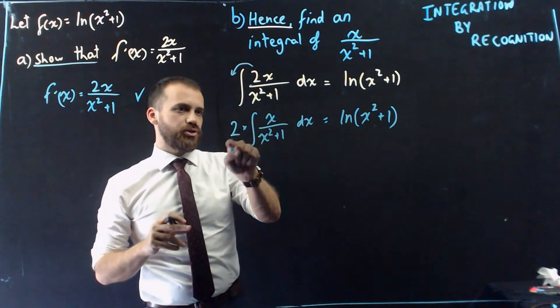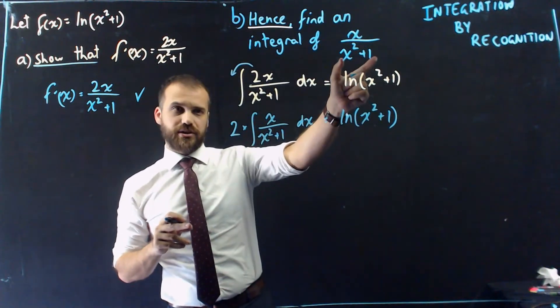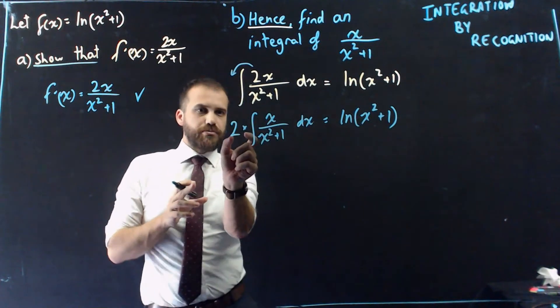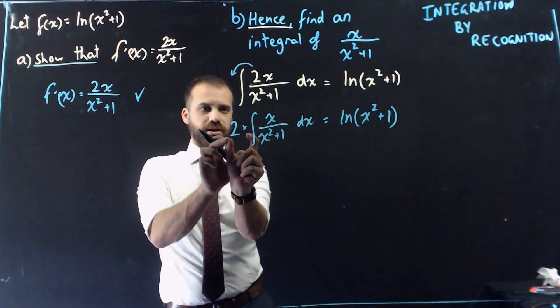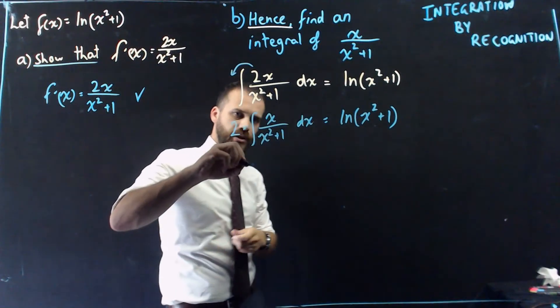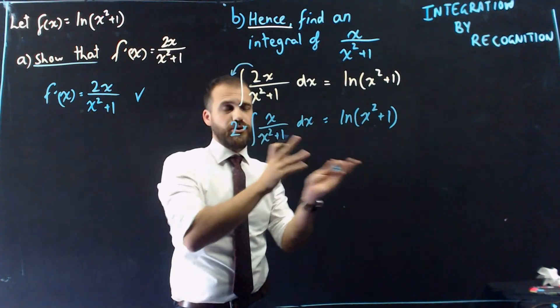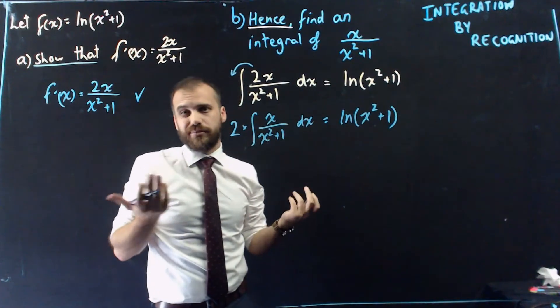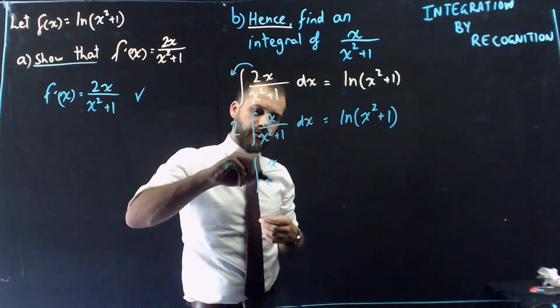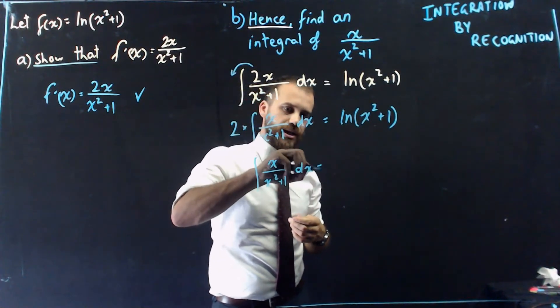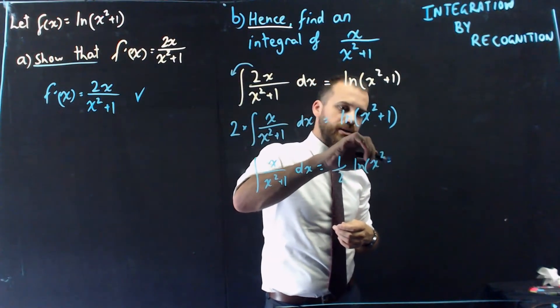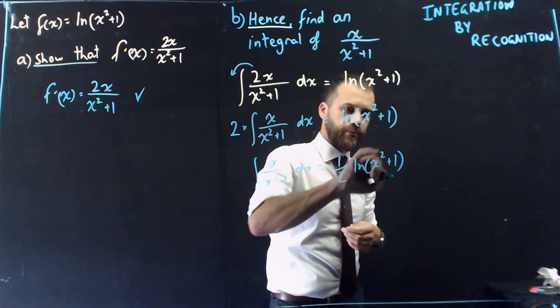Okay, so I can say that 2 times the integral of that, which is the thing I was asked to find in the first place, is equal to that. The last step here is to remove the 2 from that side, so that all I'm left with is the thing that I was originally trying to find in the first place. So to remove the 2, I'm just going to multiply both sides by 1 half, or divide both sides by 2. Same deal. So now I have integral of x on x squared plus 1 with respect to x is equal to 1 half ln x squared plus 1.